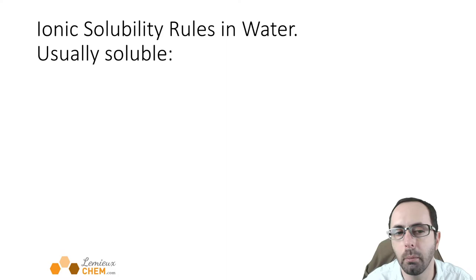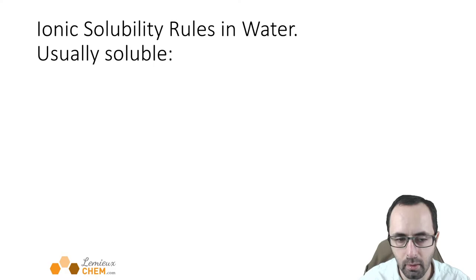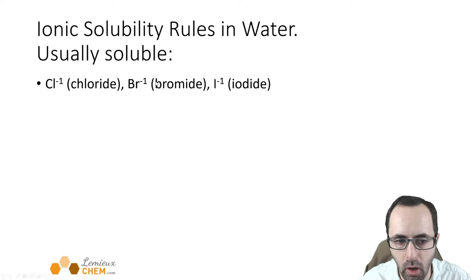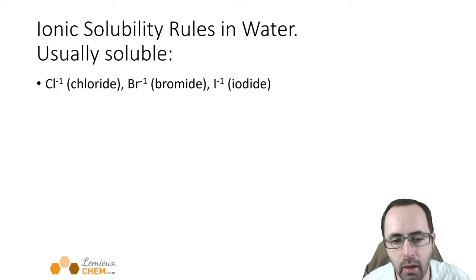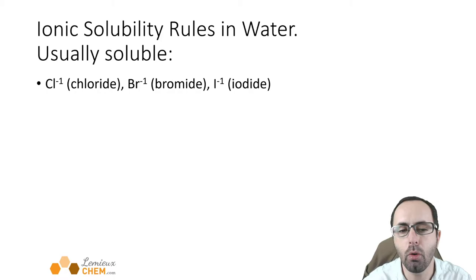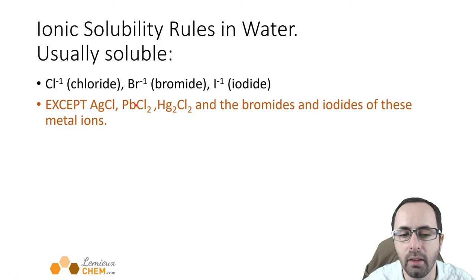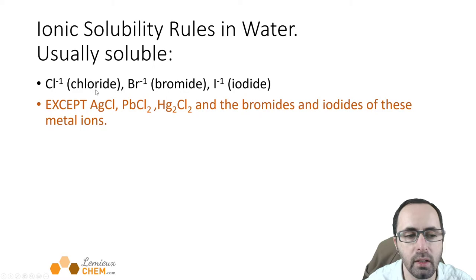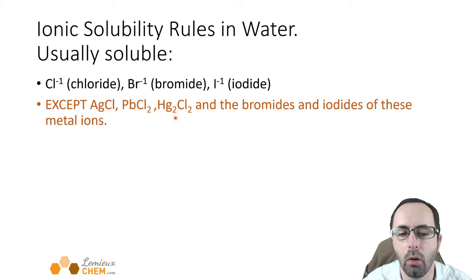These are ionic compounds that are usually soluble in water with some exceptions. If you have a halide — besides fluoride, so chloride, bromide, and iodide — the ionic compound is usually soluble, except when the positive ion is silver, lead(II), or mercury(I). So chlorides, bromides, and iodides are usually soluble unless it's silver chloride, lead(II) chloride, mercury(I) chloride, silver bromide, lead(II) bromide, silver iodide, lead(II) iodide, and so forth.